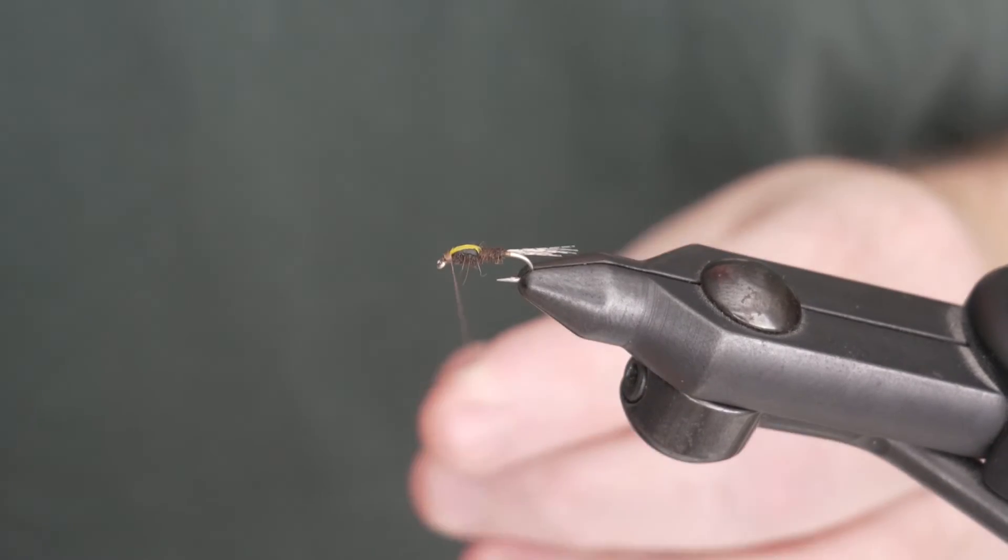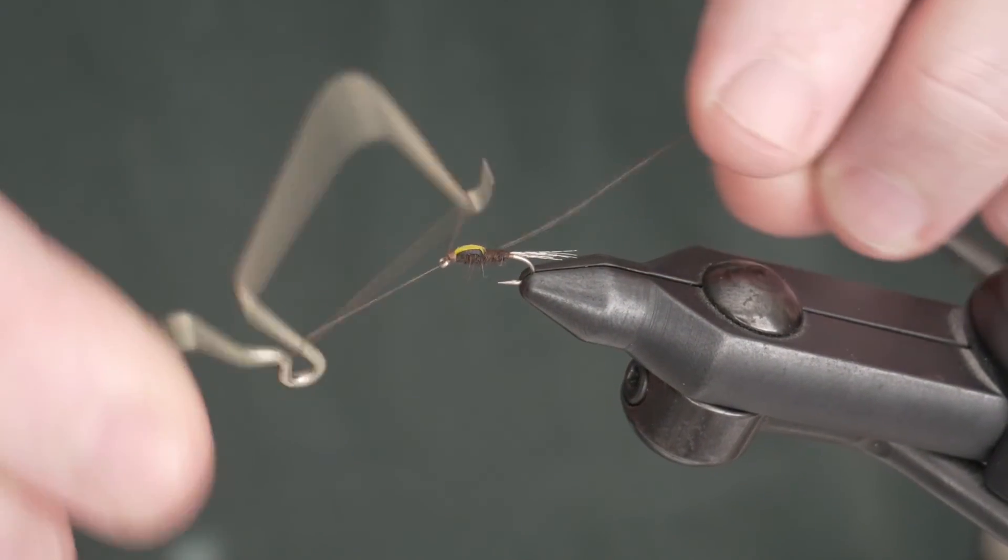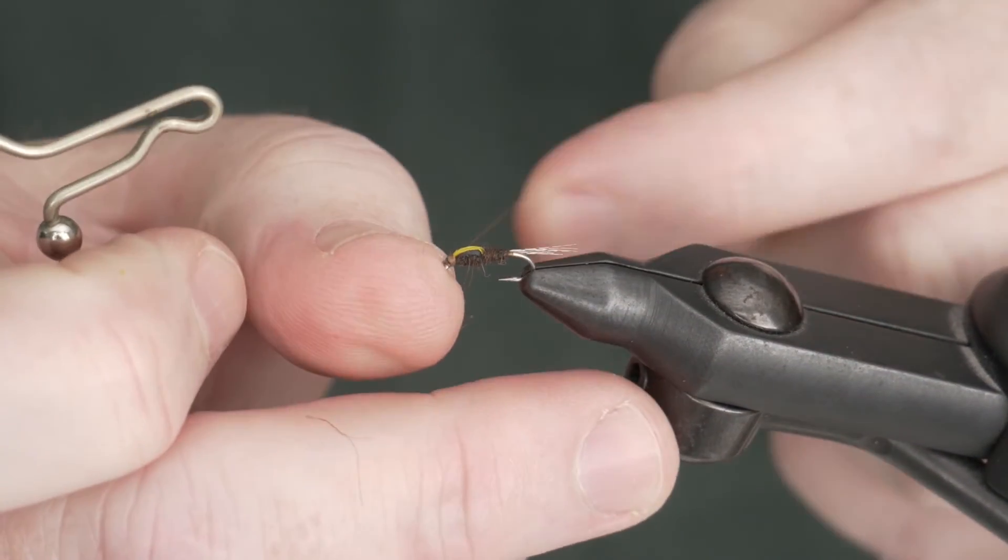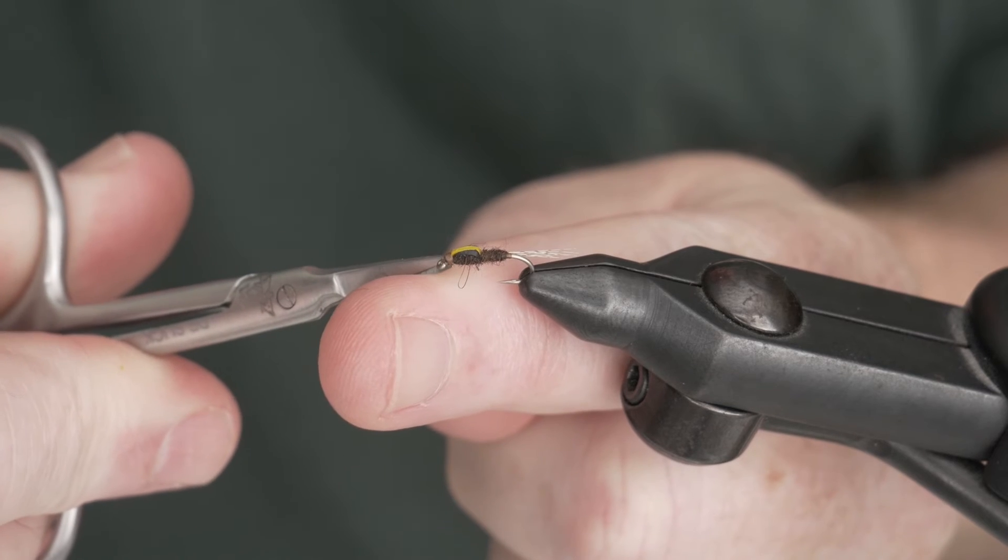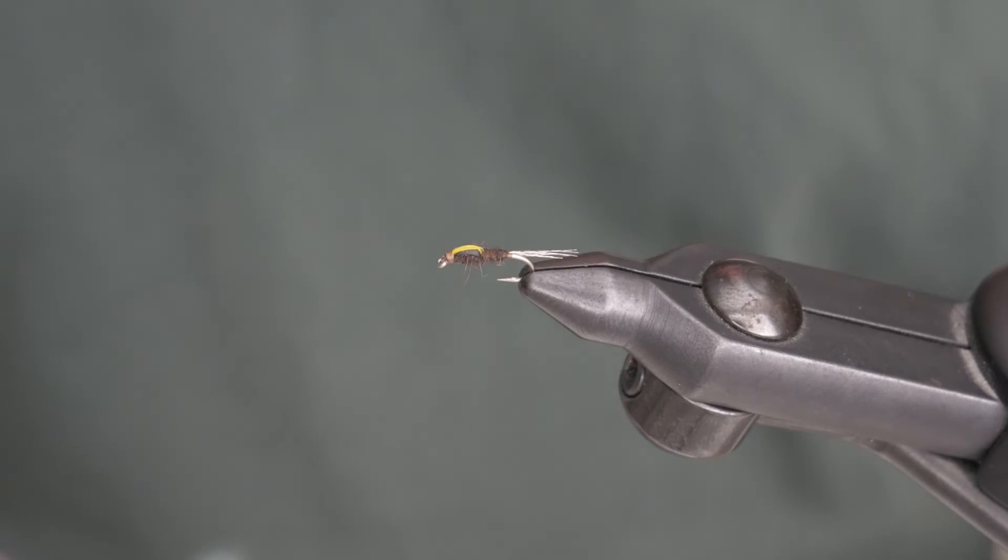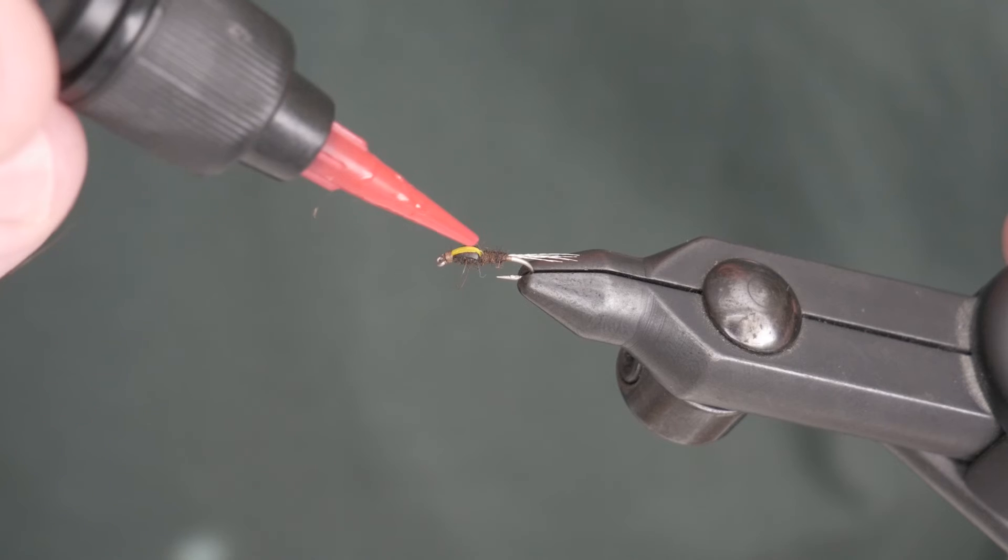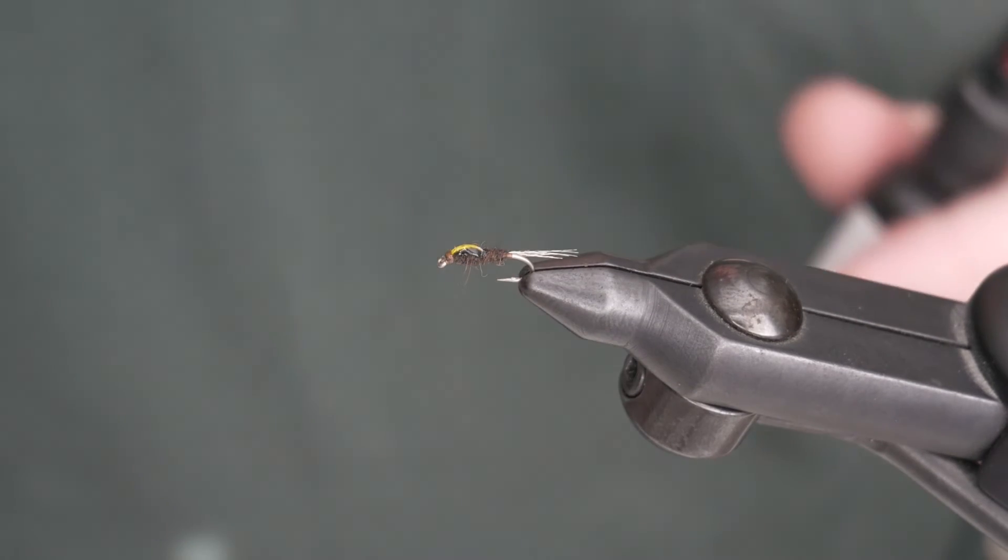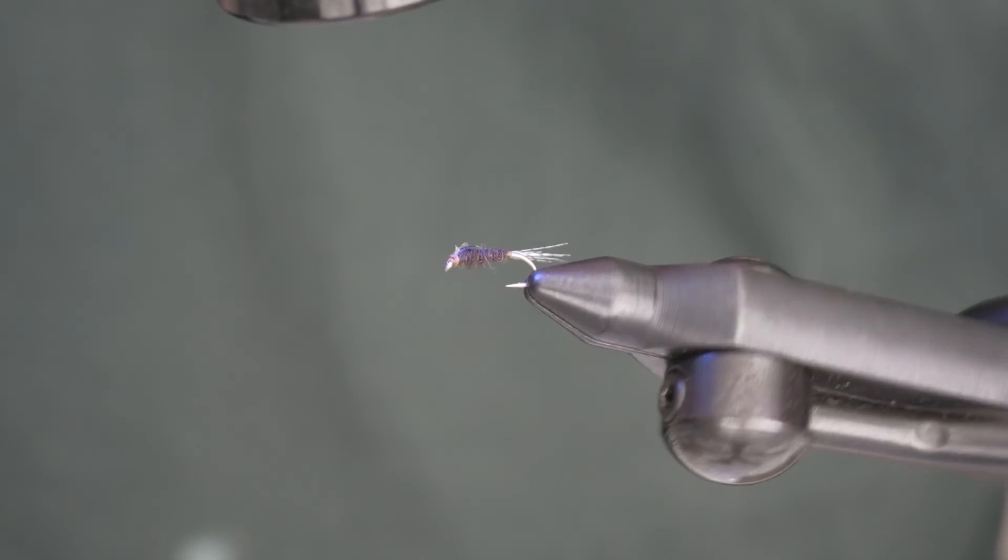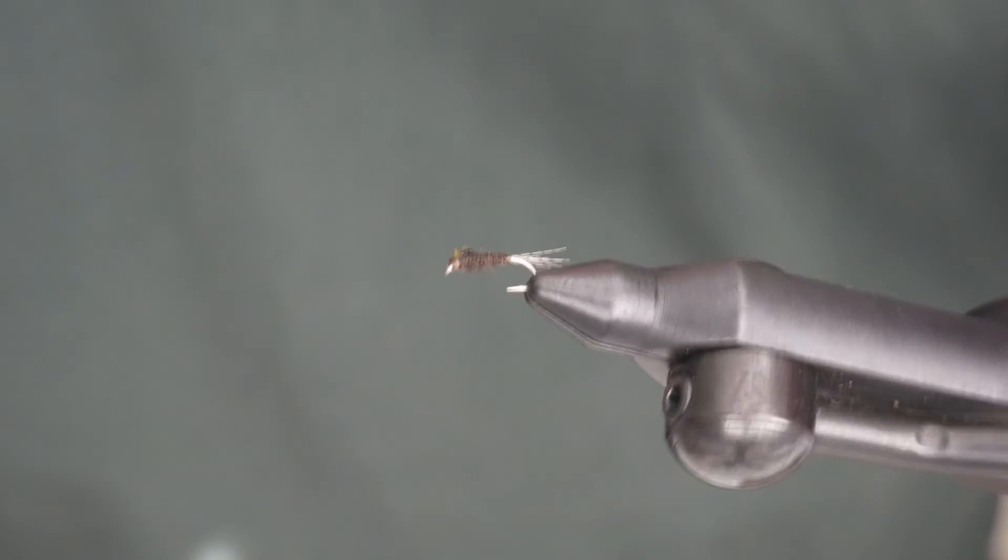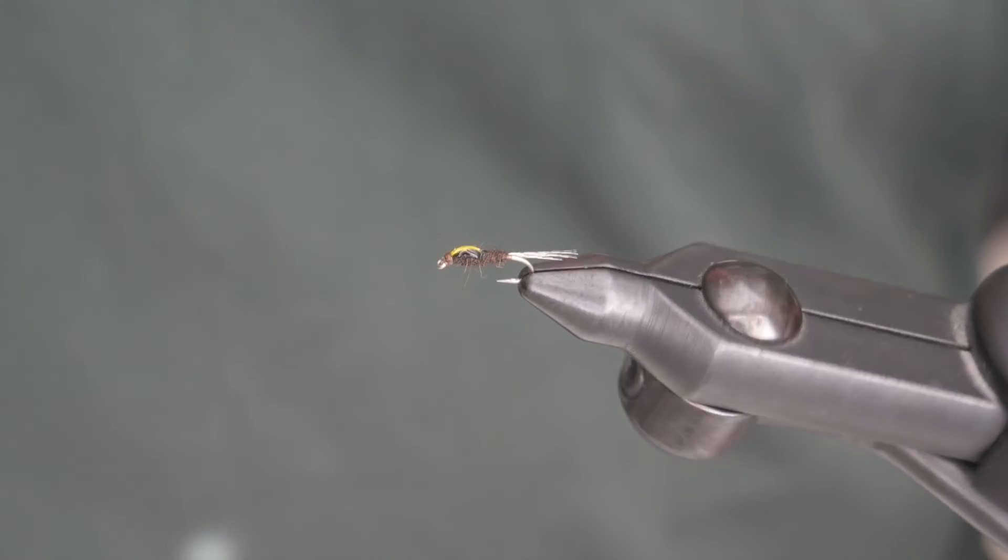Once we have our head built, I'm only going to do one whip finish because we are going to put some UV epoxy on this wing case. I mean, to me right now, it doesn't look that great. I think the epoxy really makes it pop. It's going to add a little more durability to it. Get a drop of that on the top. Just cover it up. Hit it with the light. And that's it. Split case PMD nymph.